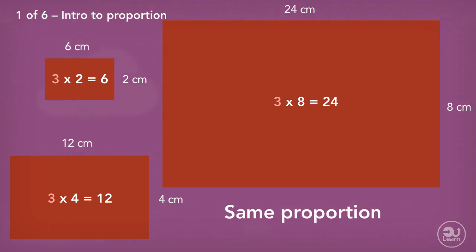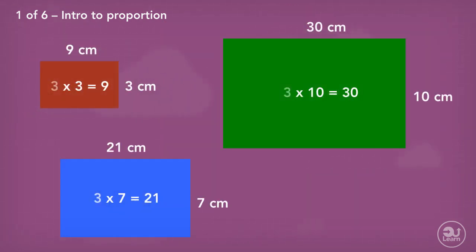With this knowledge, I could create a similar rectangle using this fact — for example, like these. Once again, the dimensions have the same proportion, because the relationship between each height and the length are the same.